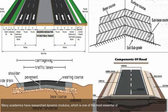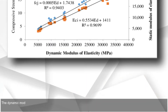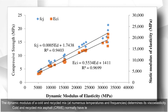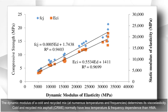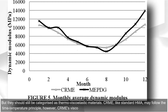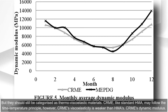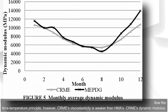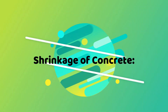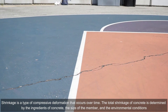Many academics have researched dynamic modulus, which is one of the most essential structural characteristics in road design. The dynamic modulus of a cold and recycled mix at numerous temperatures and frequencies determines its viscoelasticity. Cold and recycled mix asphalt (CRM) normally has less temperature and frequency dependence than HMA, but should still be categorized as thermo-viscoelastic materials. CRM, like standard HMA, may follow the time-temperature principle, however CRM's viscoelasticity is weaker than HMA's.